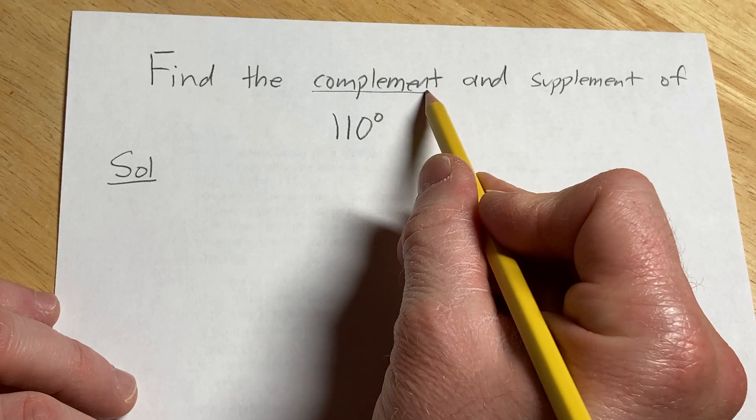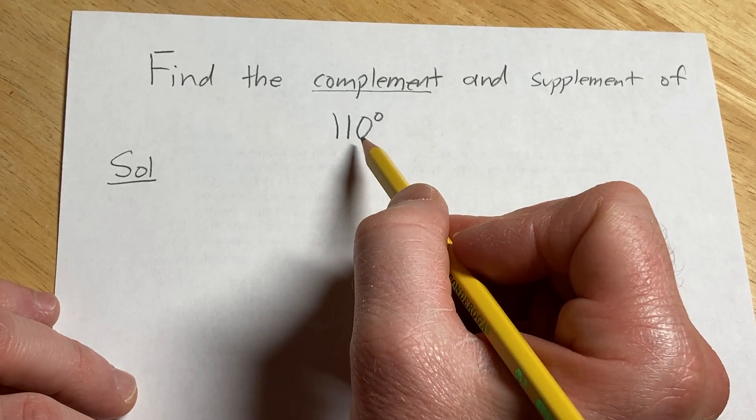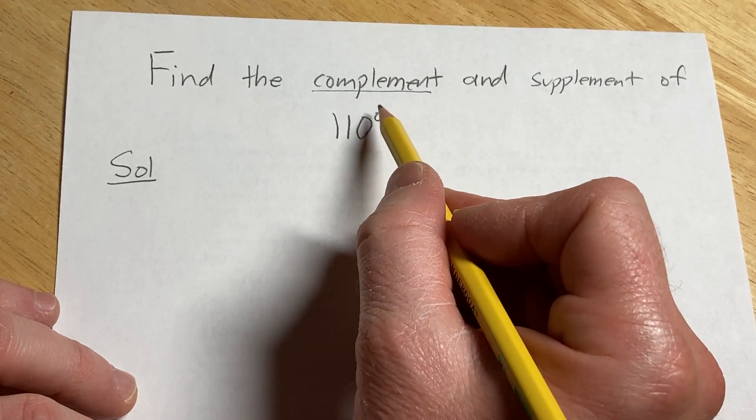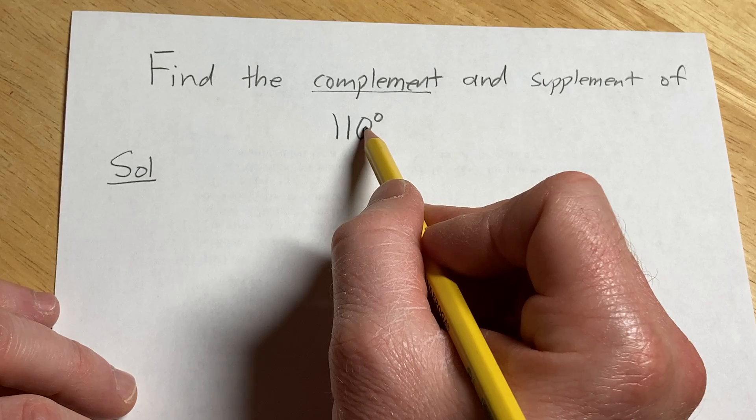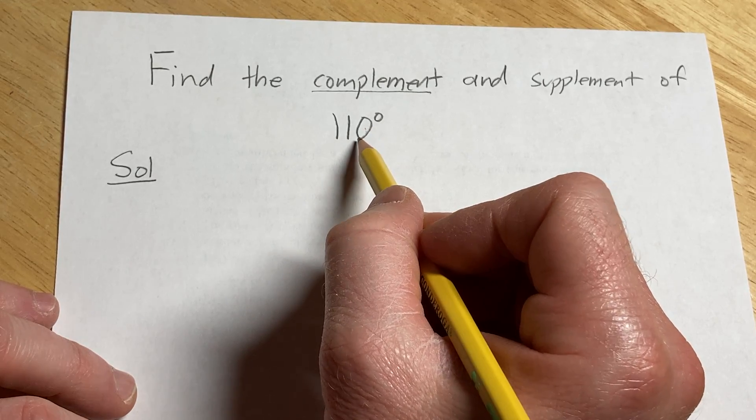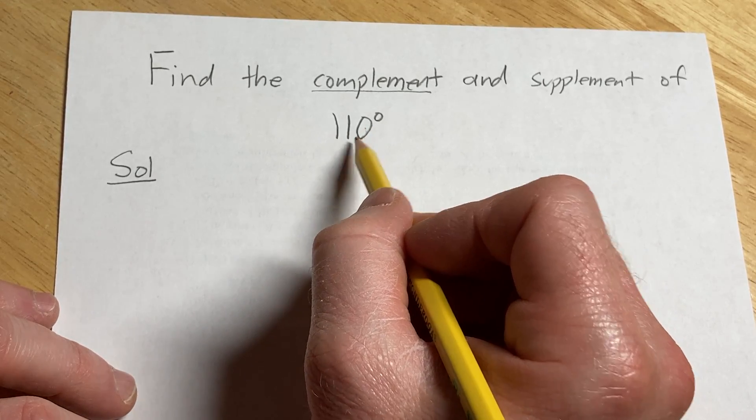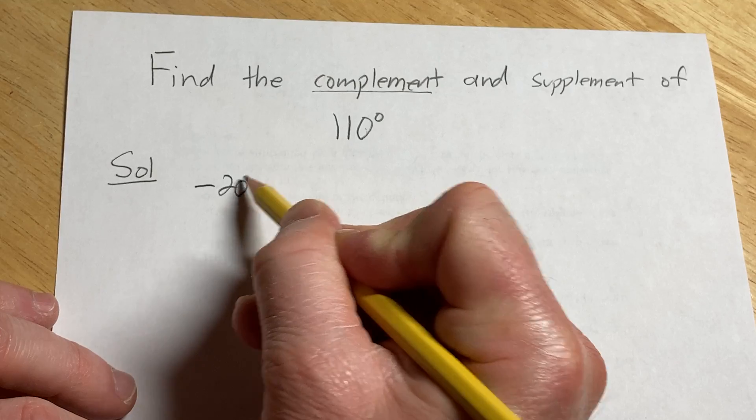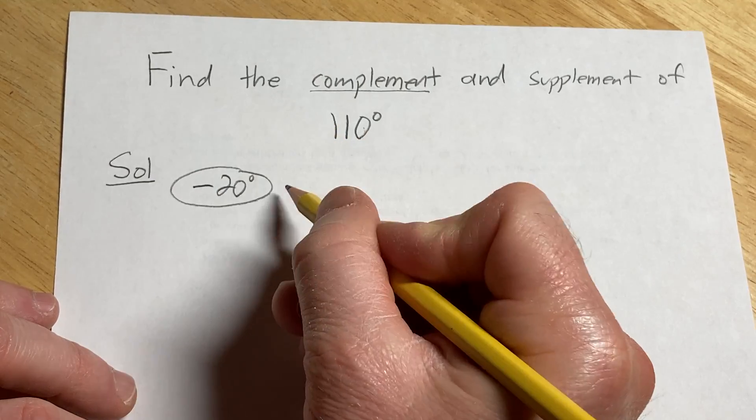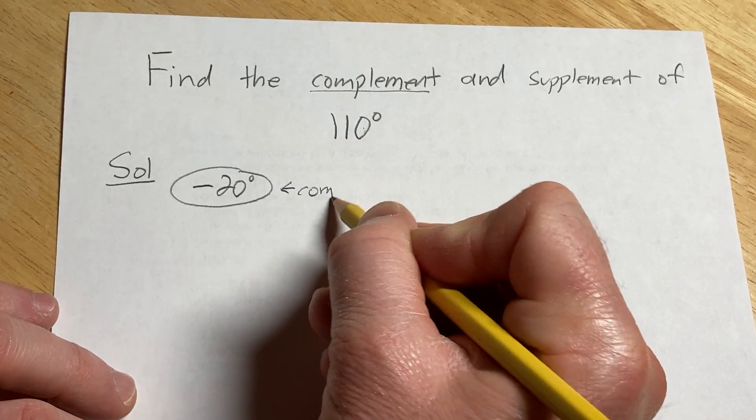So, to find the complement of 110 degrees, we have to ask ourselves, what angle can we add to 110 that's going to give us 90? Well, it's going to be a negative angle, so negative 20. So, negative 20 degrees is going to be the complement in this case.